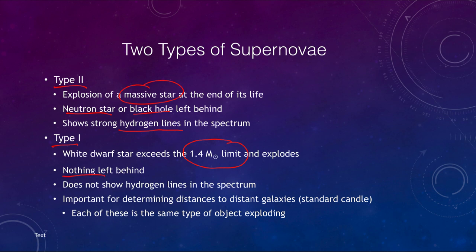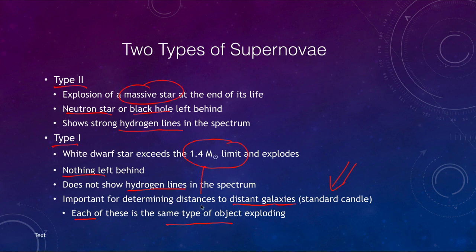In a Type 1 supernova, nothing is left behind. We do not see hydrogen lines because the white dwarf was made primarily of carbon, and the little hydrogen transferred does not give strong hydrogen lines as it would in a much more massive star exploding. These are extremely important for determining distances to distant galaxies — they are what we call standard candles. Every single one is a 1.4 solar mass white dwarf star, so there should be little difference between them when they explode. We should see the same brightness and the same patterns in their light curves, allowing us to determine distances because they all reach the same maximum brightness.